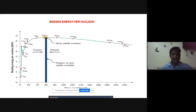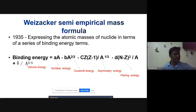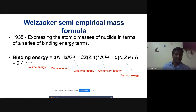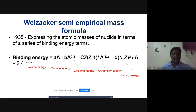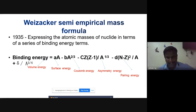The next topic is the Weizsäcker semi-empirical mass formula, an important formula for nuclear structure. Weizsäcker derived this formula in 1935 from the liquid drop model of the nucleus. He stated that binding energy is not a single energy but a combination of five different energy terms: volume energy, surface energy, Coulomb energy, asymmetric energy, and pairing energy. The formula is: BE = aA − bA^(2/3) − cZ(Z-1)/A^(1/3) − d(N−Z)²/A ± δ/A^(3/4), where a, b, c, d, and δ are constants.